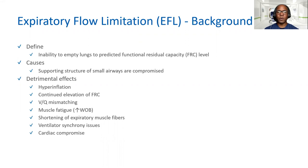There is increasing work of breathing as the patient tries to overcome these issues. Extra muscle fibers are recruited, and there is continual destruction. If they're on the ventilator, they can have asynchrony issues — not being able to cycle a breath or initiate a breath. And because of the increase in intrinsic auto PEEP, you can have cardiac compromise.